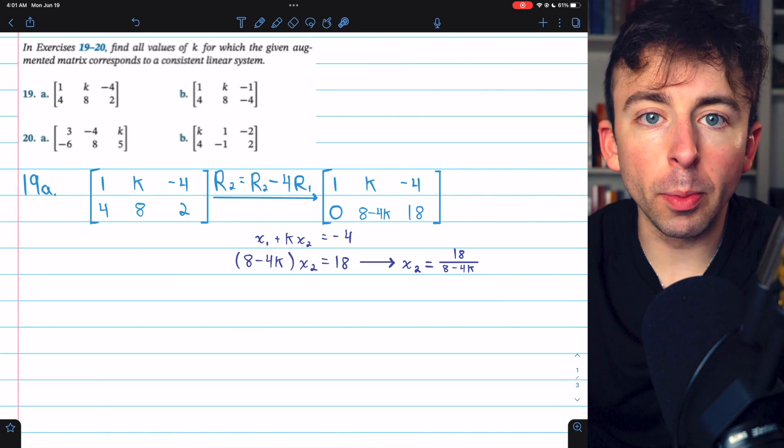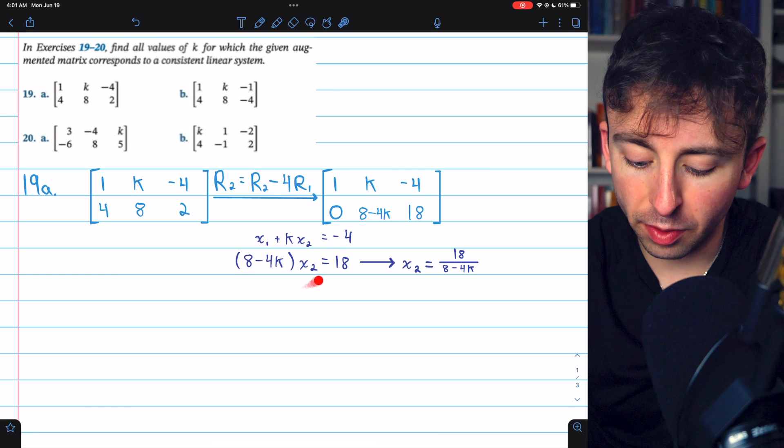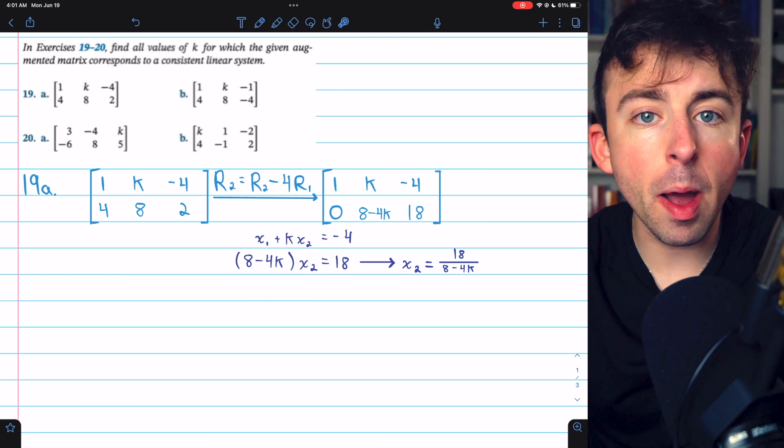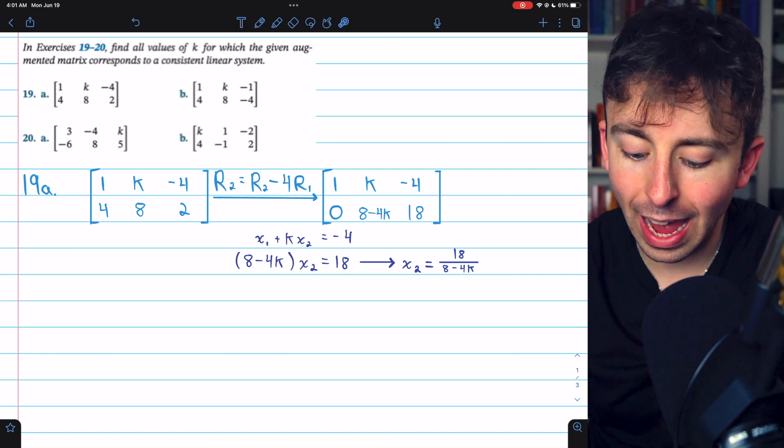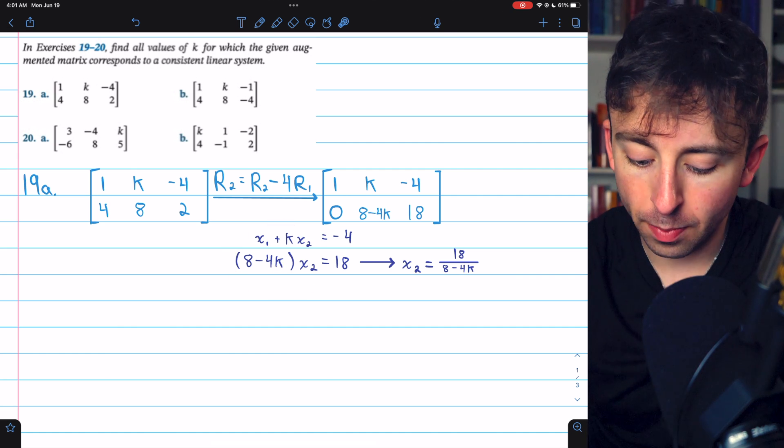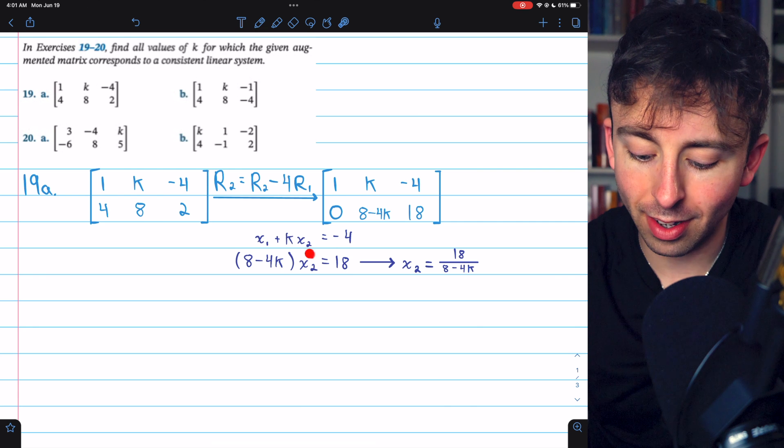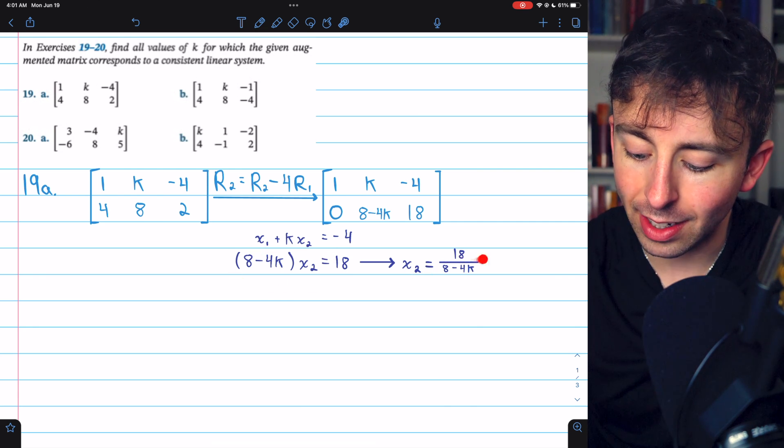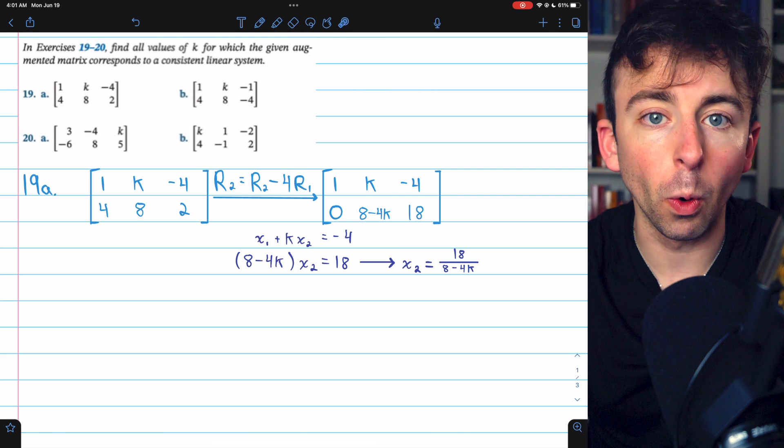And from here, we're almost done. This is the system of linear equations that this augmented matrix corresponds to. Remember, our goal is to figure out which values of k will make this a consistent system. Well, dividing the coefficient to the right side in this second equation, we have that x2 equals 18 over 8 minus 4k.